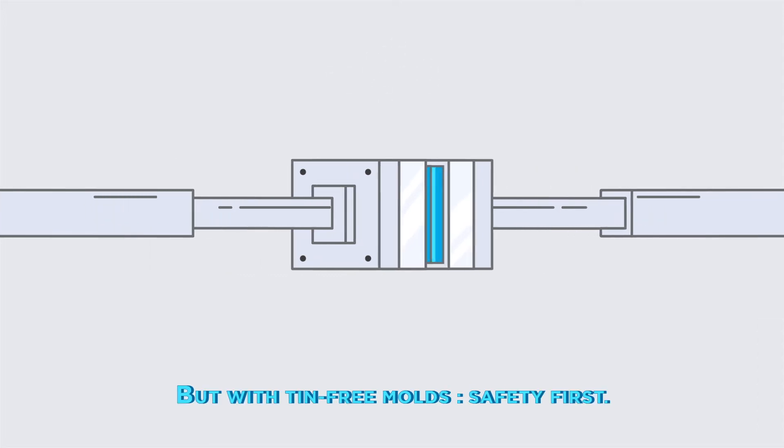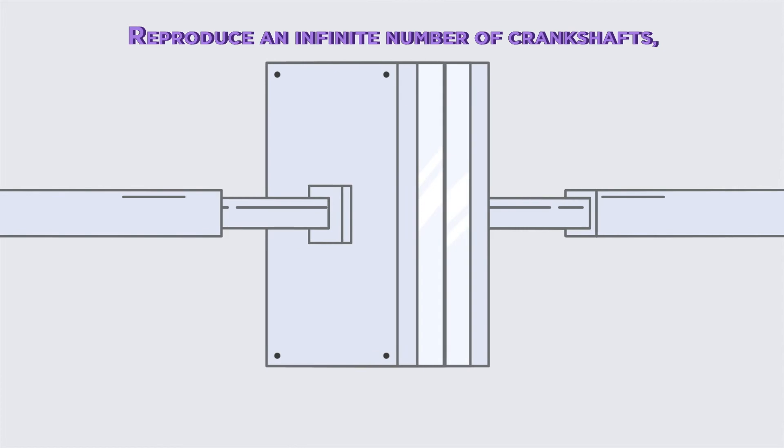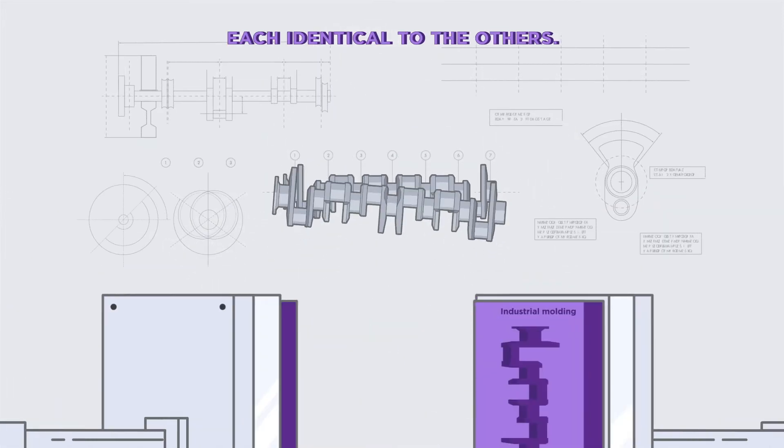Tame molten metal. But with tin-free molds, safety first. Reproduce an infinite number of crankshafts, each identical to the others.